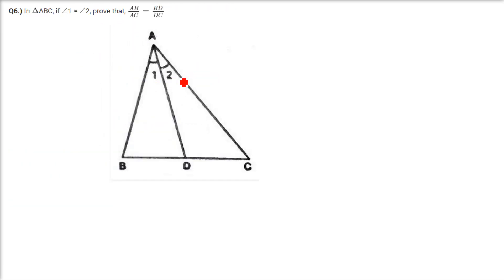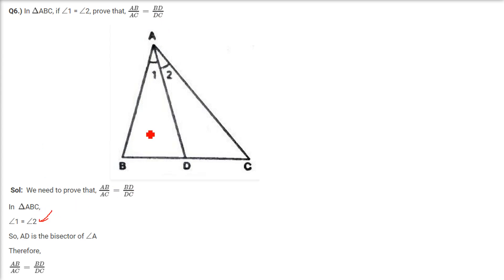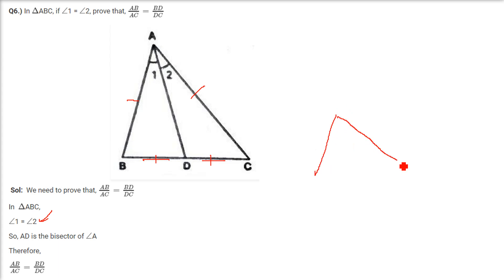Next: angle 1 equals angle 2 is given; we have to prove that AB by AC equals BD by DC. Since angle 1 equals angle 2, that means AD is the internal bisector. When the internal bisector divides the opposite side into two parts, those two parts are in the same ratio as the sides holding the angle. So AB by AC equals BD by DC. There is another way to prove this — I am just giving a hint.